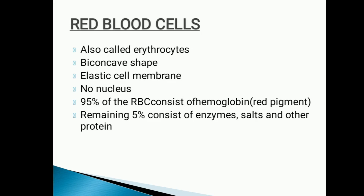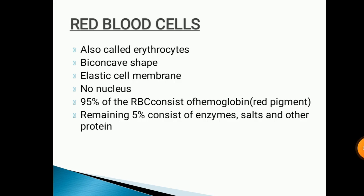Next we have RBCs, or red blood cells, also known as erythrocytes. They comprise 62.5% water, 35% hemoglobin, and 2.5% sugar, lipids, and proteins. RBC cells are circular, biconcave, and non-nucleated. They also have an elastic cell membrane. The average RBC count in human blood is approximately 5.5 million per milliliter cube.